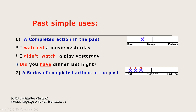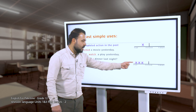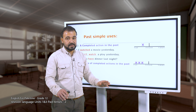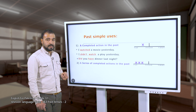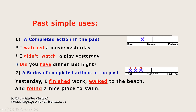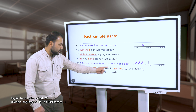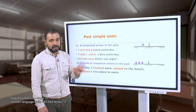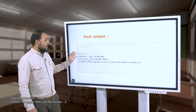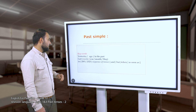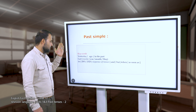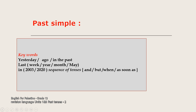The second use of the past simple tense: to talk about a series of completed actions in the past. We have more than one action, all completed in the past. Example: 'Yesterday I finished work, walked to the beach, and found a nice place to swim' - three actions all completed in the past. Keywords related to the past simple: yesterday, ago, in the past, last week/year/month, in 2003/2020, etc.